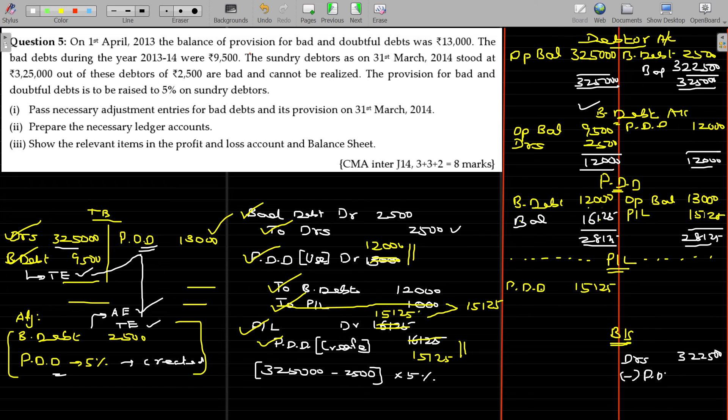That amount is supposed to be made. Can be subtracted from the debtors account, 16,125. And balance will be shown as a debtors balance. Is that okay?